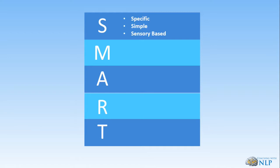First of all, a goal needs to be Specific, Simple, and Sensory-based. The unconscious mind likes to follow the path of least resistance. Very often people say 'I want to feel happier' or 'I want to make more money' — very vague goals. The question is, what does that really mean? What is 'more money' compared to what? We want to be very specific.